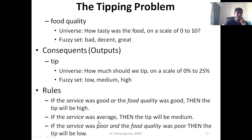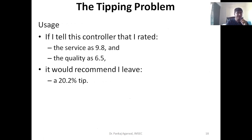We can create such kinds of systems and this can be put as embedded code into a machine which can make such decisions. For example, if I tell a controller that I rated the service 9.8 and the food quality 6.5, by applying those functions and rules, it would come up with the automatic answer — 20.2%. This becomes an automated representation. This was all about fuzzy systems.